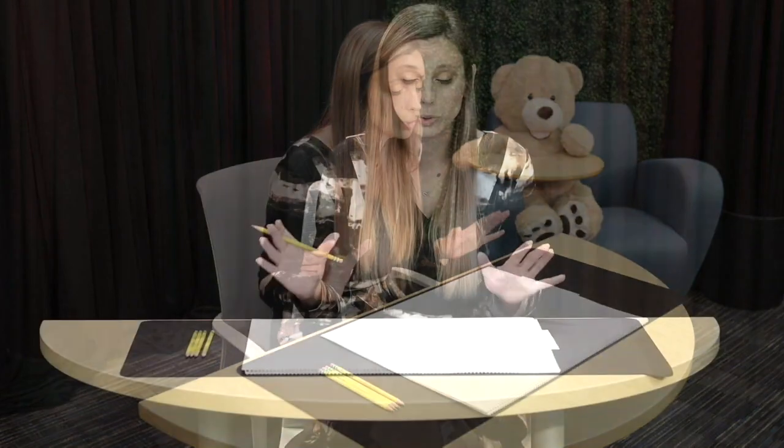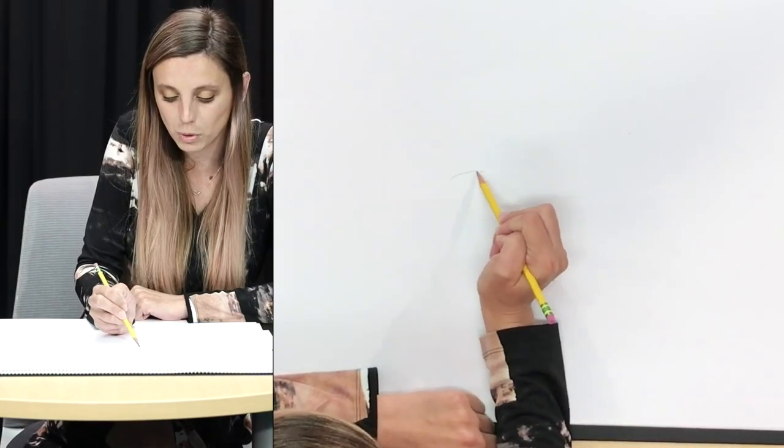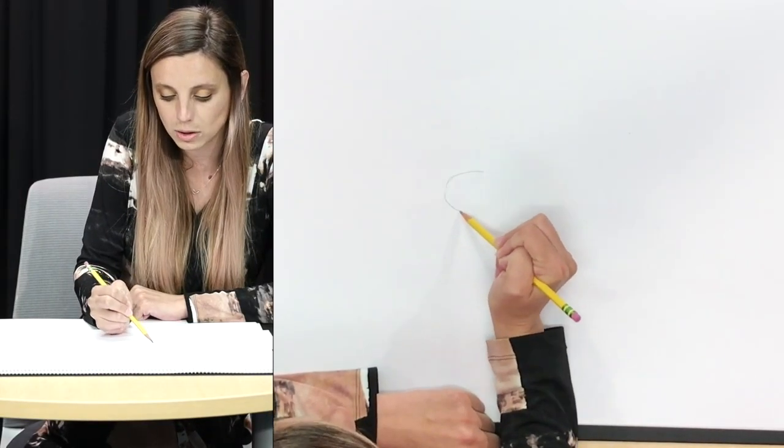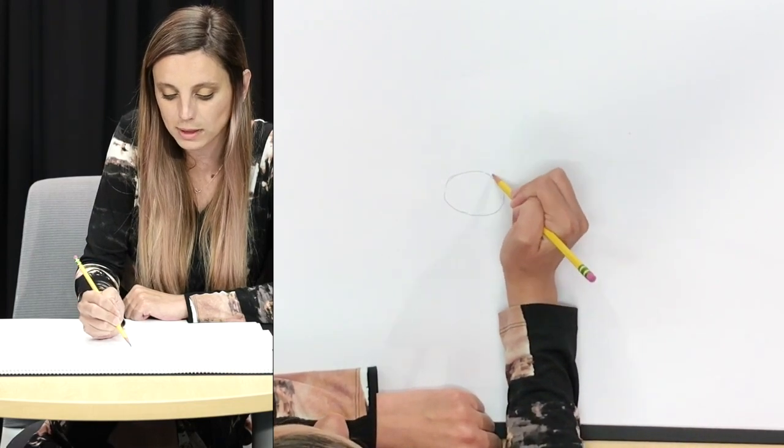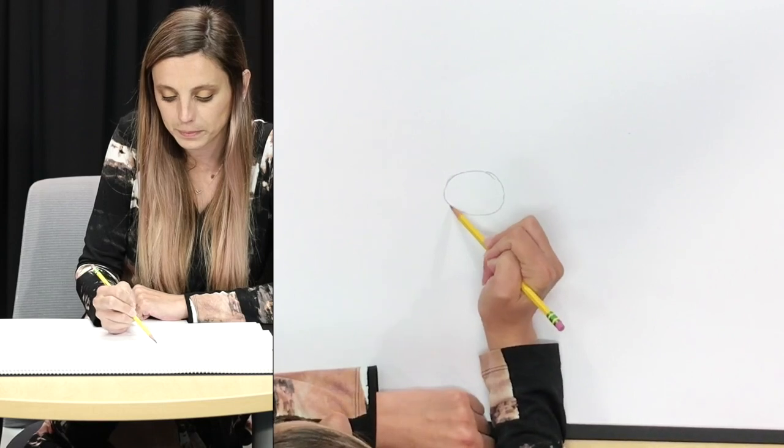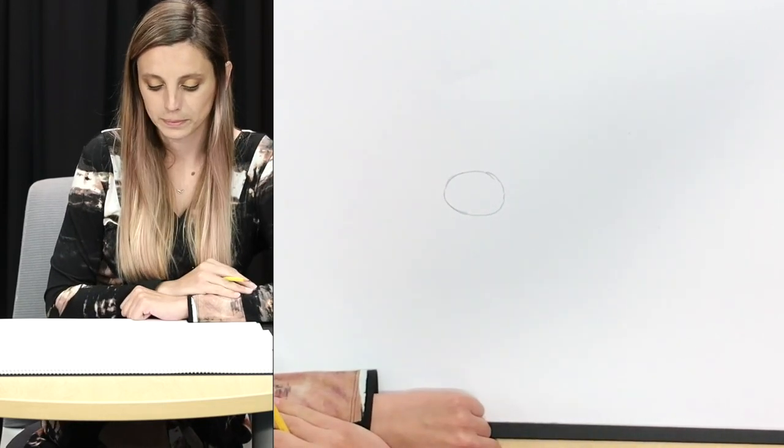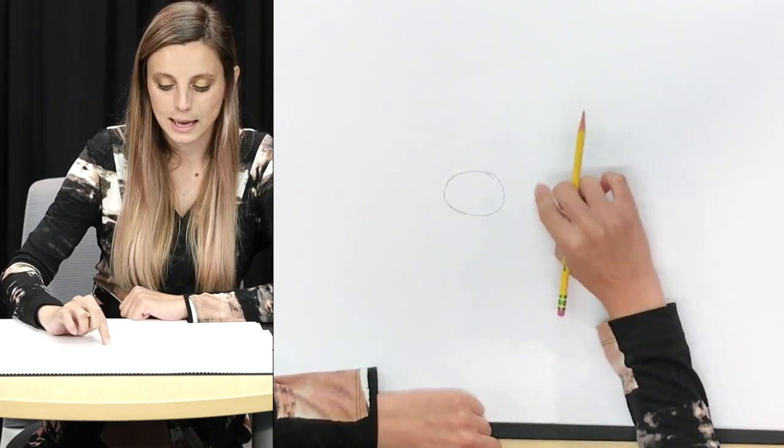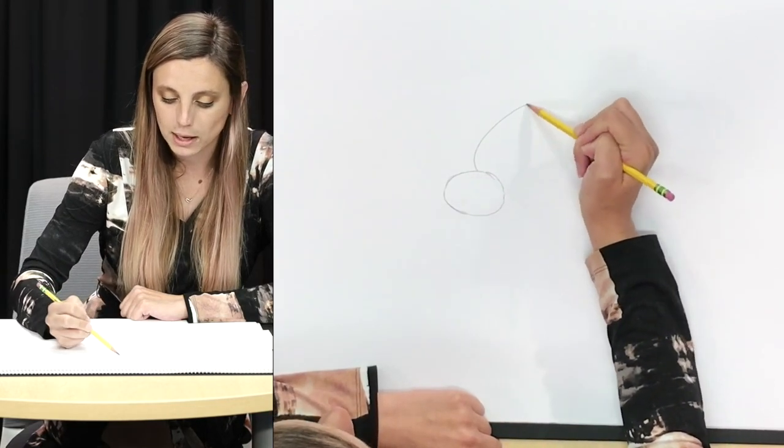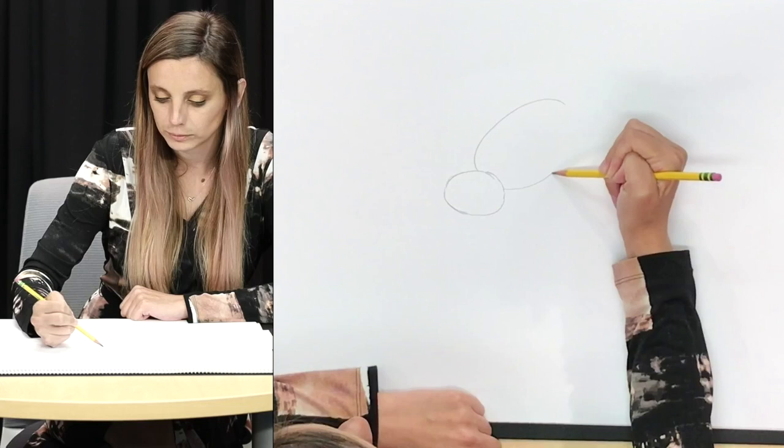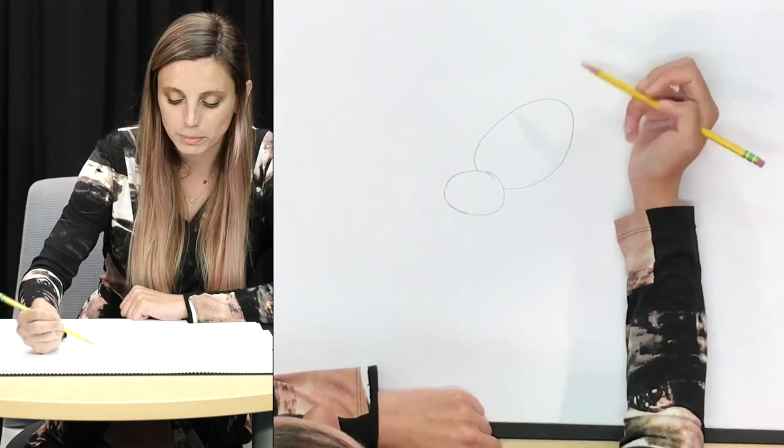To start today we're going to do two ovals and we're going to use those as the guiding lines to make our tarantula's body. First, starting around the middle of our paper we're going to make an oval that's a little bit more wide than it is tall and this is going to be our tarantula's carapace or what we think of as its head. Next we're going to make a long oval that lies diagonally to make our tarantula's abdomen or what we think of as its body. And if your ovals aren't perfect that's okay.